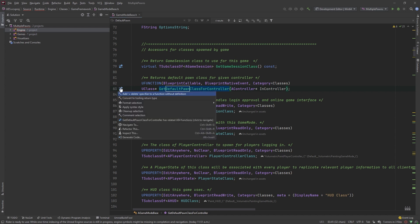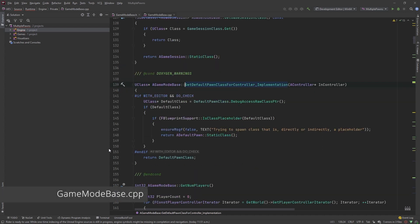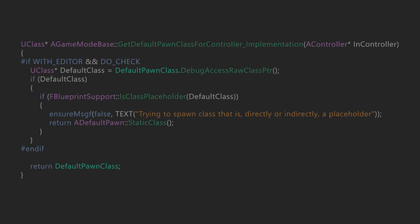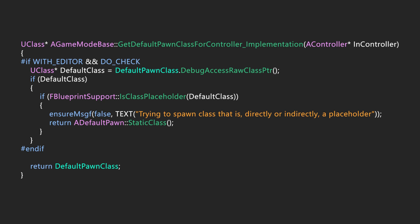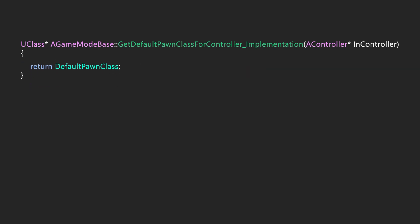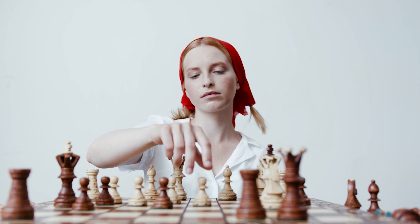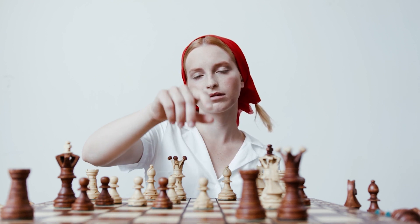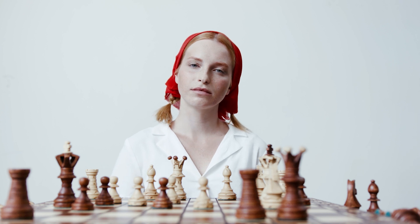The function returns the default pawn class. There are two return statements - one returns the static class of a default pawn, and another returns the default pawn class. Essentially all it's doing is returning the pawn that should be spawned, which is perfect, because we want this function to be called and return a pawn that we specify. Now that we know where we can set our starting pawn, we have a plan of attack. Let's implement that plan by creating our own game mode class. The first thing we want to declare in our game mode header file is the function we're overriding.